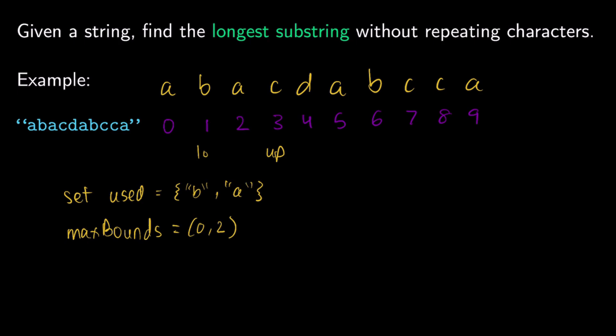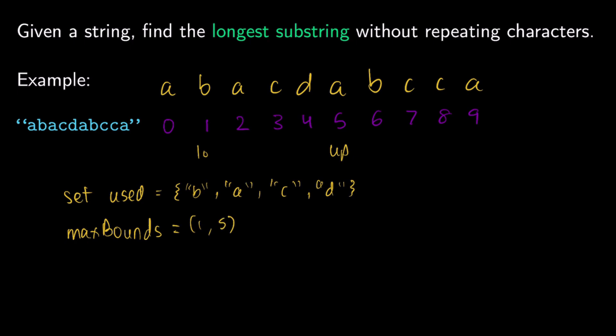We can generally repeat this process. Let's speed some stuff up. We'll move up once again, add the character C — which is unique — and the new max_bounds will be from 1 to 4, because the difference is now 3 rather than 2. Then we move up once again because D is also a unique character. We add D to our used set, and our new max_bounds is (1, 5), which is a length of 4.